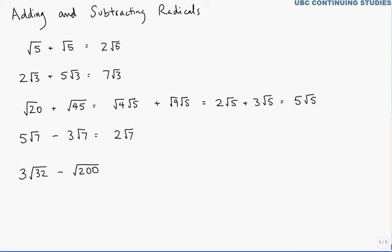So 3√32 - √200, okay, the two radicands are totally different, but we haven't simplified them. Can we simplify √32? Yes, the largest perfect square factor of 32 is 16, so this can be written as 3 times √16 times √2, and the largest perfect square factor of 200 is 100. So this can be written as √100 times √2.